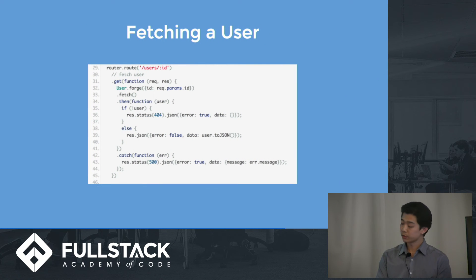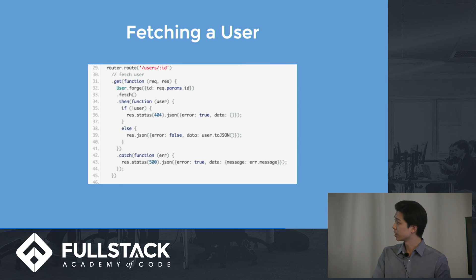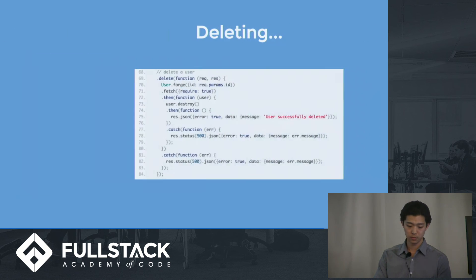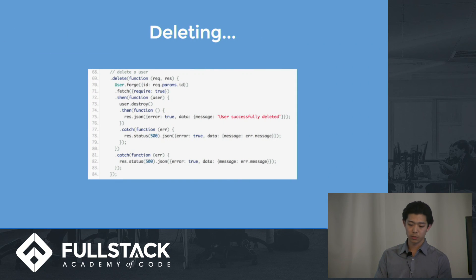To fetch the user, we basically do the same thing — a forge with the request params ID and then fetch. To update the user details, we instantiate a new user model with the ID given from the parameter. On line 50, we fetch with required set to true, which means the fetch is considered a failure if the model comes back empty. To delete the model, we use forge and fetch again, then on line 73 we use the destroy method to delete it, which performs a delete on the model using its ID as the constraint.